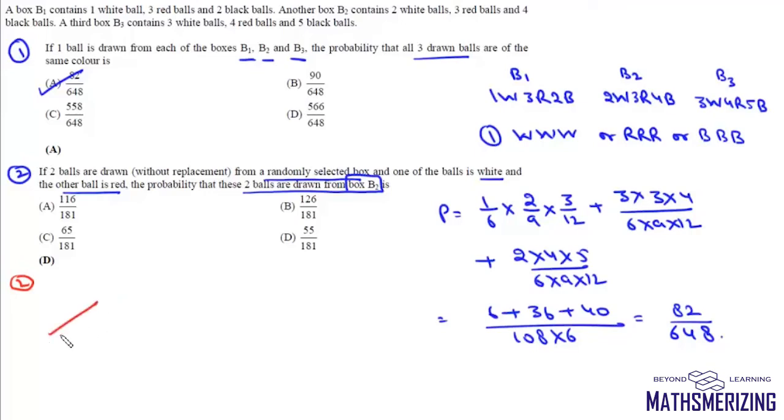Now these 2 balls may be from box B1 or B2 or B3. Now the probability of choosing any one box is 1 by 3, 1 by 3 and 1 by 3. Now if we choose B1, then the probability of getting one white and one red will be 1C1 into 3C1 upon 6C2. Now for second,